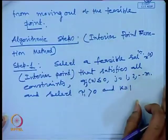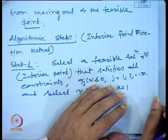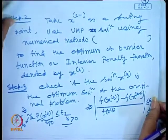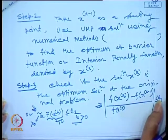Last class we discussed how to solve the non-linear programming optimization problem using the interior point method. The algorithm steps involved are: first, you take a point inside the feasibility region, which we call the interior point. Then you write the necessary condition equations. These necessary condition equations depend on the number of decision variables involved in the optimization problem.